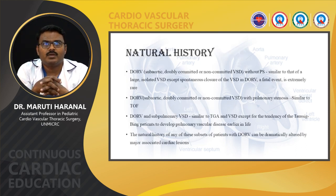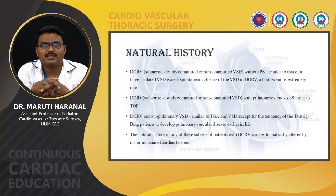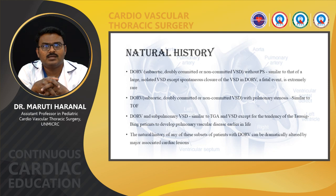Regarding natural history, DORV with subaortic, doubly committed, or non-committed VSD without pulmonary stenosis has a natural history similar to isolated VSD, except that spontaneous closure of the VSD in DORV is extremely rare and is a fatal event. DORV with pulmonary stenosis has a natural history similar to tetralogy of Fallot. DORV with subpulmonary VSD is similar to TGA with VSD, except for a tendency in Taussig-Bing patients to develop pulmonary vascular disease earlier in life. The natural history can be dramatically altered by major associated cardiac lesions.